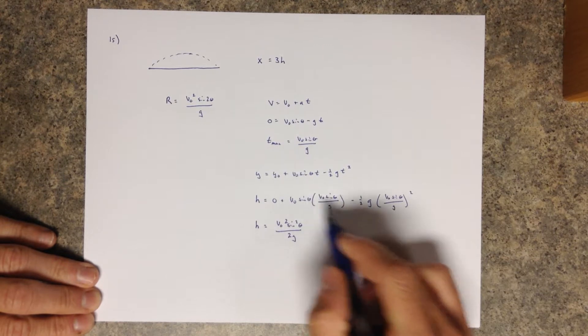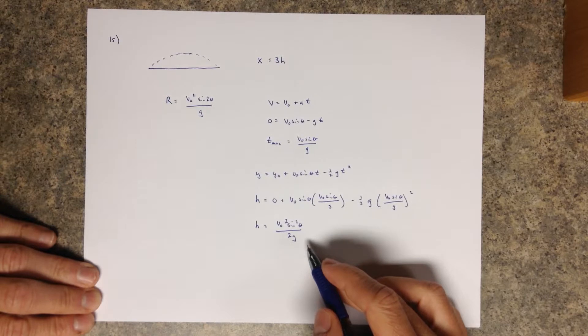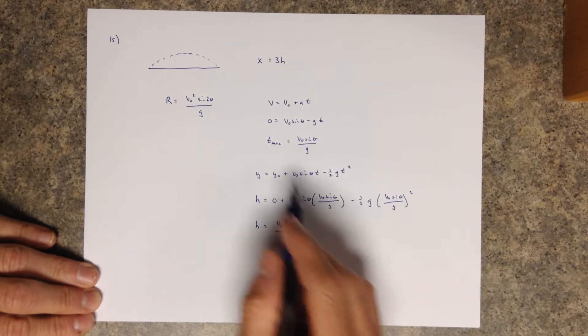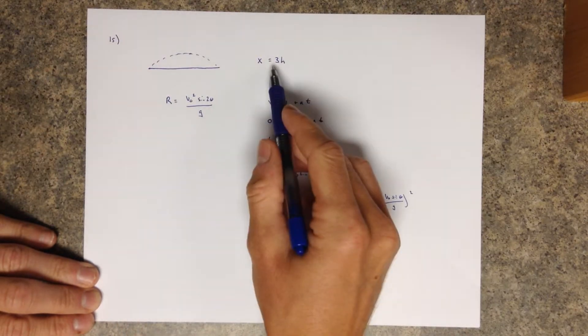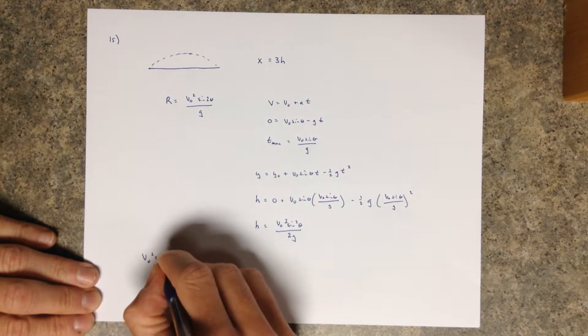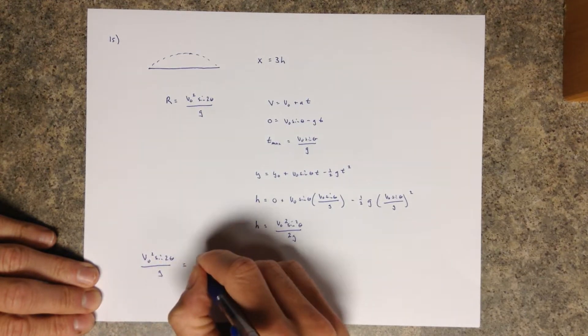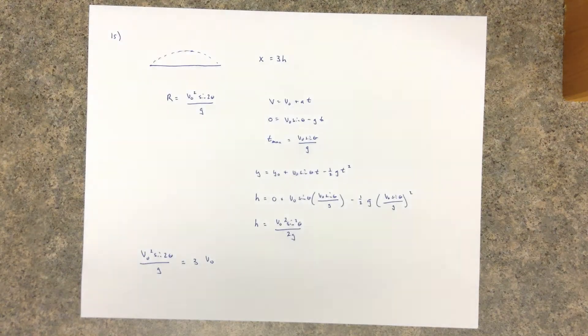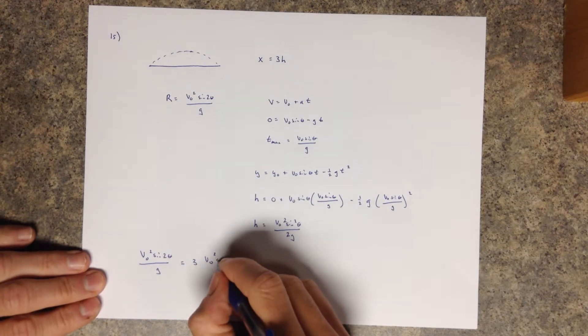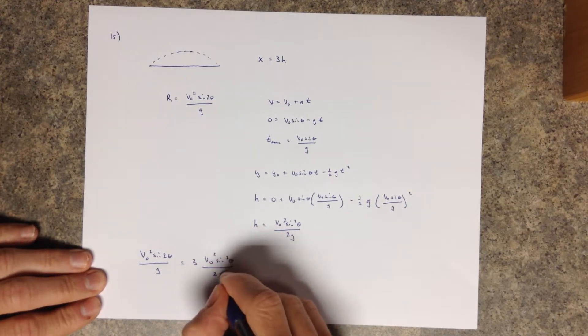So really then, this is our max height, and this is our range. And so we want to go back to this original equation, x. So v naught squared sine 2 theta over g equals 3 times the max height, v naught squared sine squared theta over 2g.